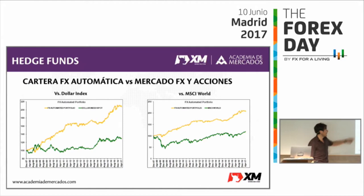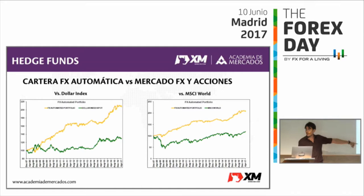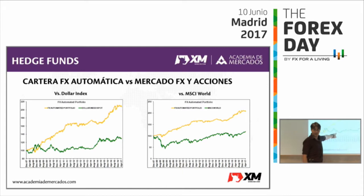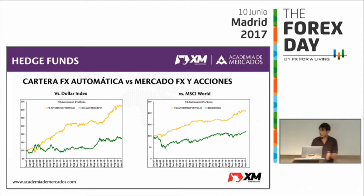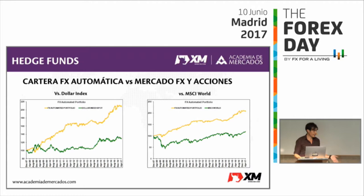Imaginaos que la línea verde es vuestro trading discrecional, que va bien, e incluís la estrategia automatizada. Si repartís vuestro dinero entre la estrategia que ya teníais más la nueva creada, ¿qué os sale? Algo más estable. La idea de hacer este tipo de estrategias es mantener lo que tenéis si os va bien, pero incluir estrategias automatizadas y descorrelacionadas que os mejoren la cartera. En un mundo perfecto la cartera fuera una línea recta que sube. No la vamos a conseguir jamás, pero podemos acercarnos.